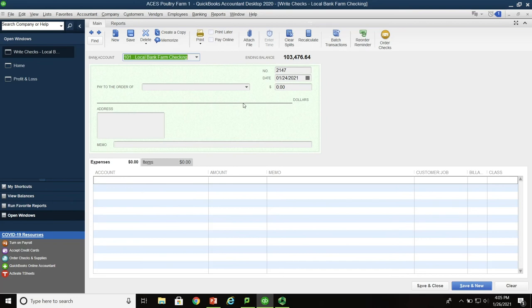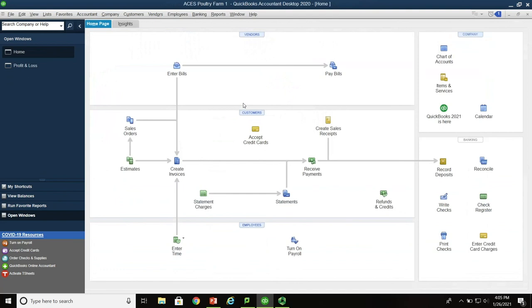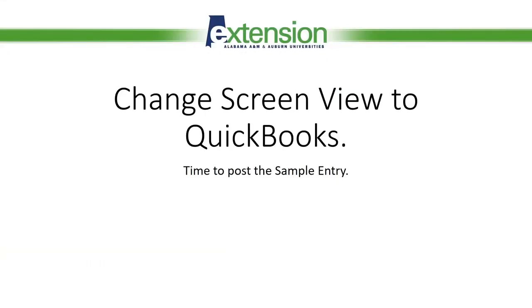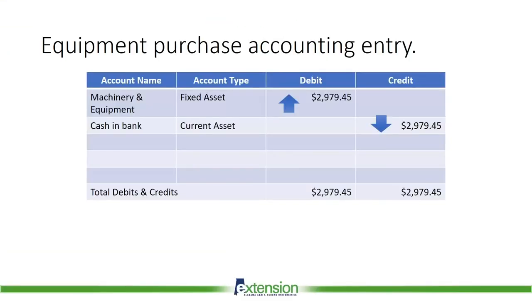That completes the second check. Let's take a look at the accounting entry we just made. The equipment purchase entry: machinery and equipment, which is a fixed asset, is debited for $2,979.45 and cash and bank is credited for $2,979.45, with total debits and credits matching at $2,979.45.